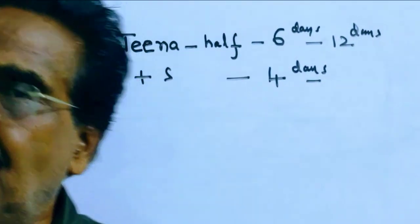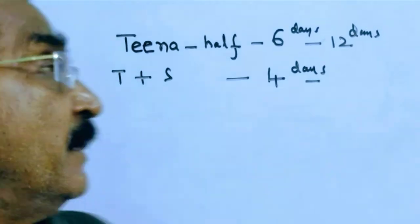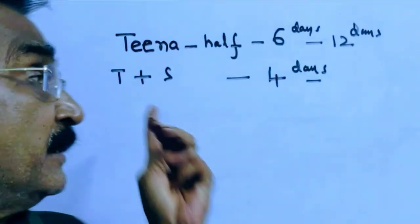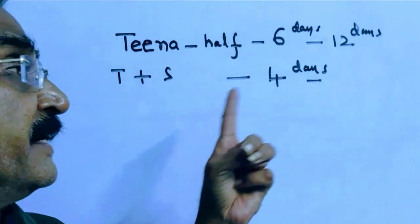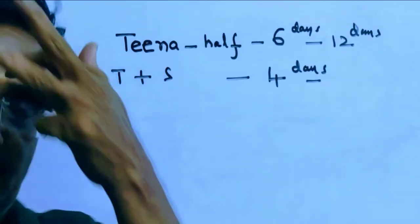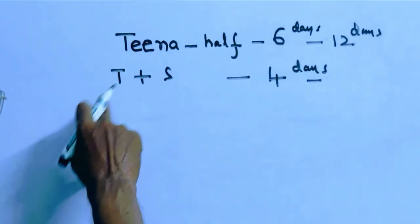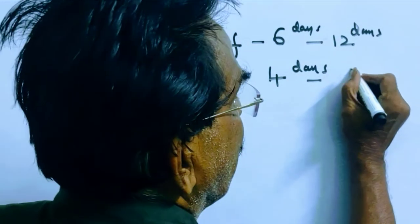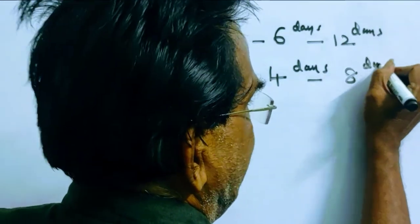Friends, with the help of Sean, Tina can do the remaining half of the work in 4 days. So T plus S can do half of the work in 4 days, which means Tina plus Sean can do full work in 8 days.